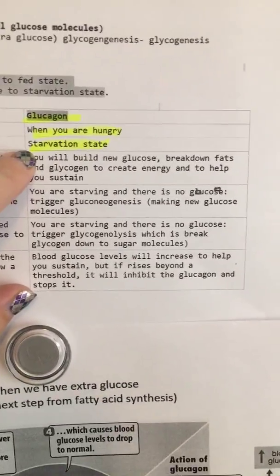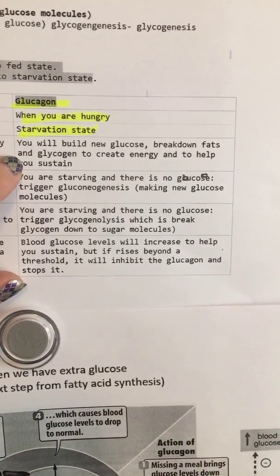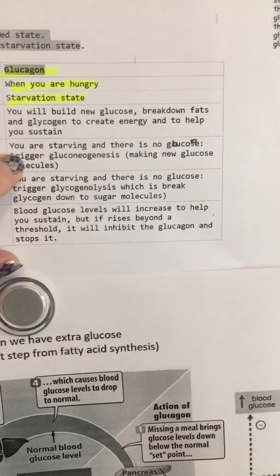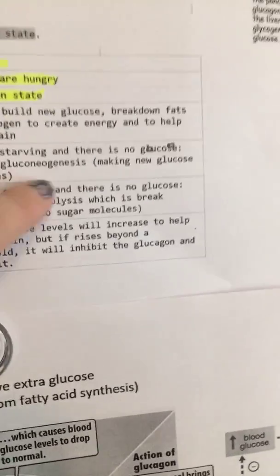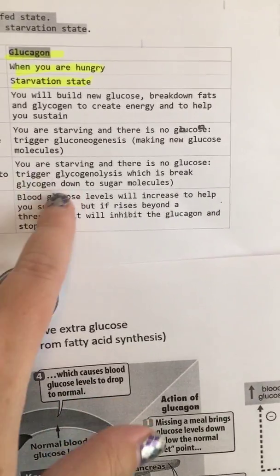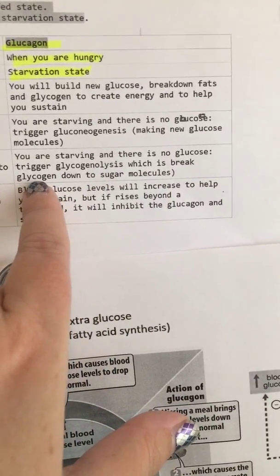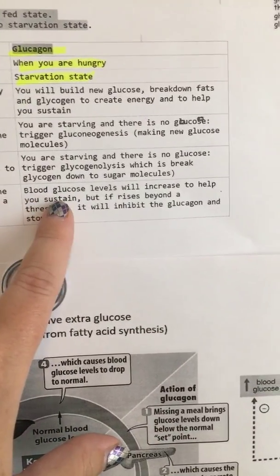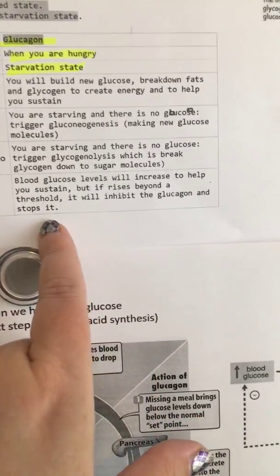Glucagon happens when you're hungry and in a starvation state. You're going to build new glucose — breaking down fats and the glycogen to create energy and help you sustain yourself. You're starving and there is no glucose, so you're going to be triggering gluconeogenesis, which is making new glucose molecules. Also you're triggering glycogenolysis, which is breaking down those glycogen stores into glucose. Then blood glucose levels will increase to help you sustain, but if it rises above threshold, it'll inhibit the glucagon and stop it.